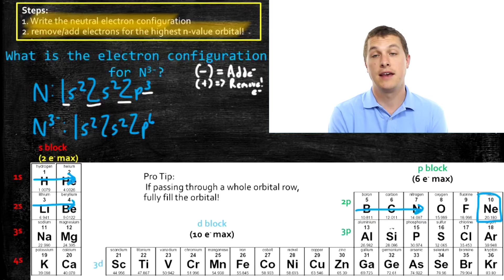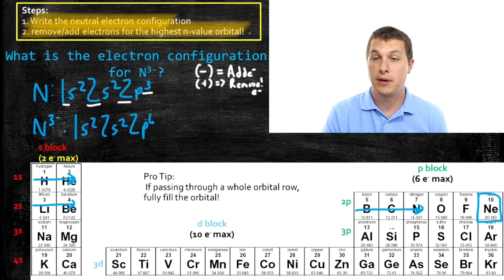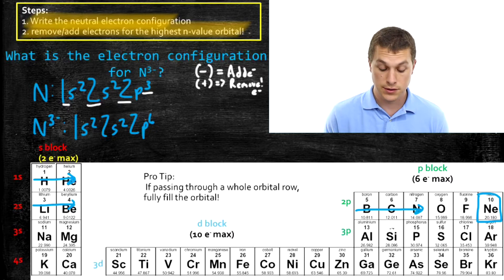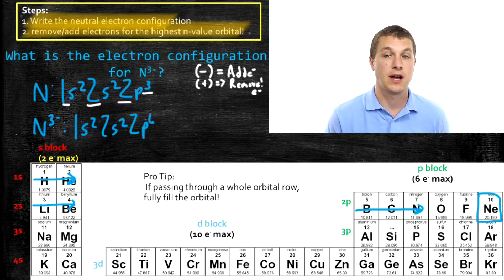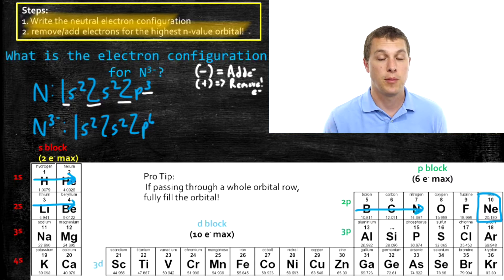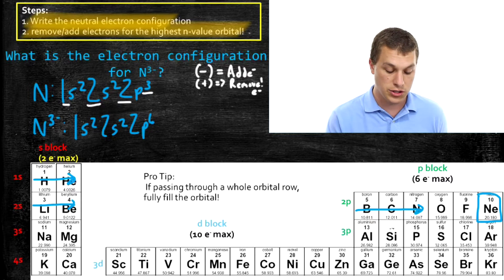And that will often be the case. Our ions will typically have full shells of electrons. Particularly those ions that are in the P or S block. The D block ions look a little different. But for ions in the S block or the P block, you typically form ions with full outer shells.